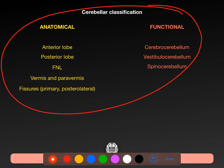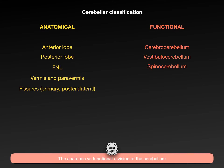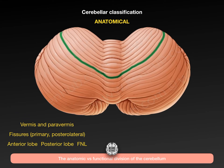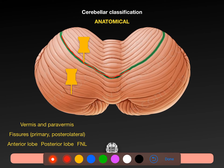You need to understand that the cerebellum can be divided by neuroanatomists and neuroscientists in different ways. Anatomically, you need to know about the vermis, the paravermis, the fissures, the anterior lobe, the posterior lobe, and the flocculonodular lobe. The first pin has dropped on the primary fissure - this little gap. We have another fissure here called the horizontal fissure, and the posterolateral fissure is on the other side.